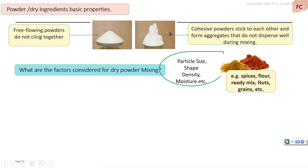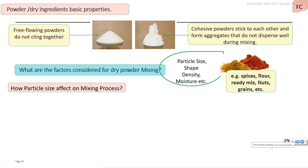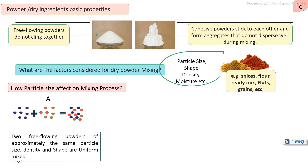How particle size affects mixing operation: the first case — two ingredients, both free flowing powders with similar size. In this case, the mixing unit operation is very uniform and the mixing operation is of high quality.